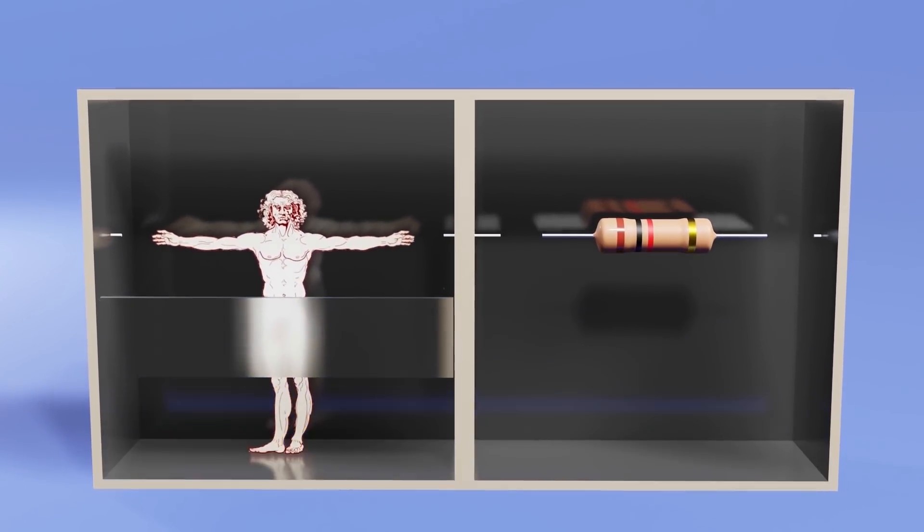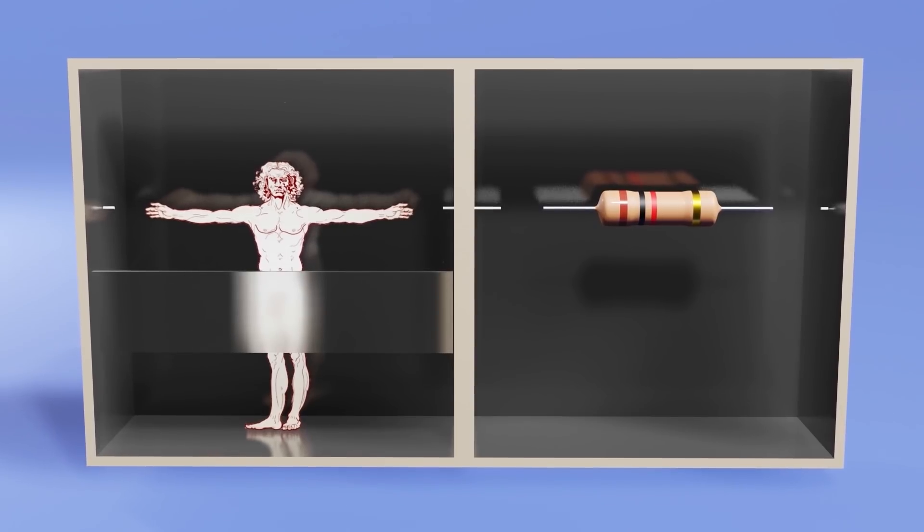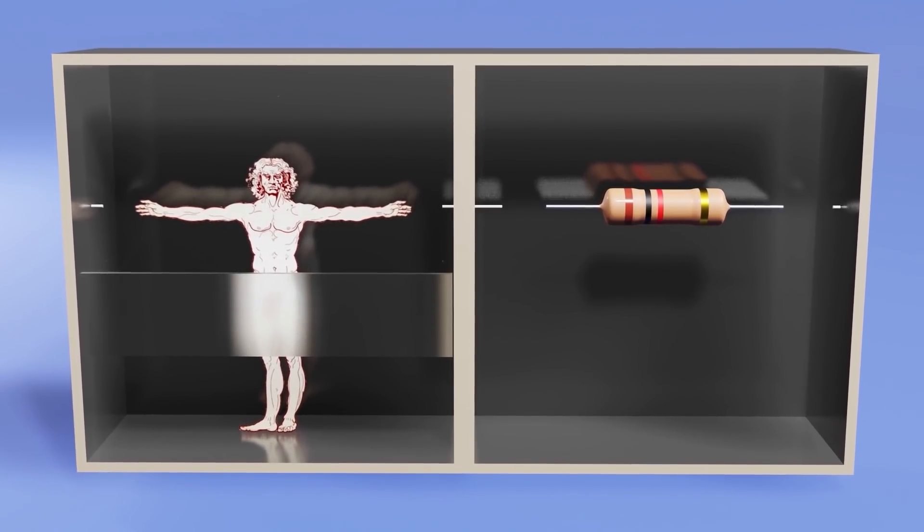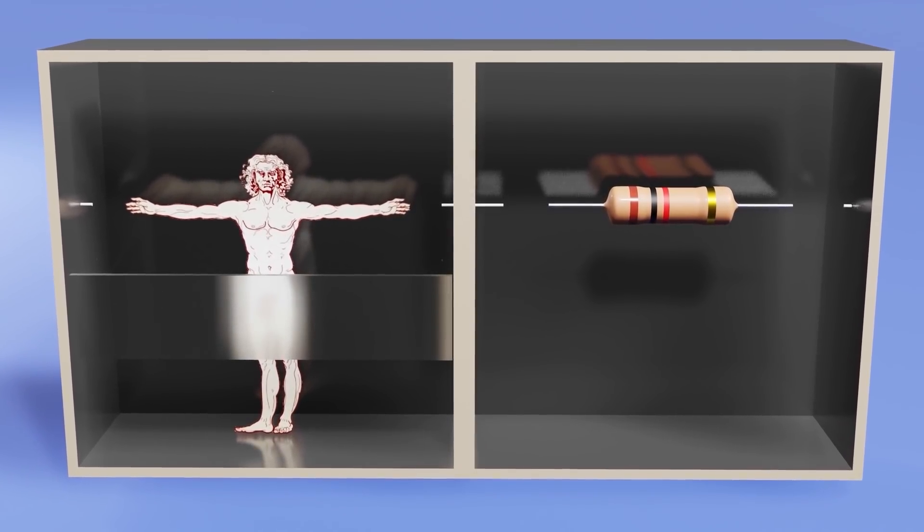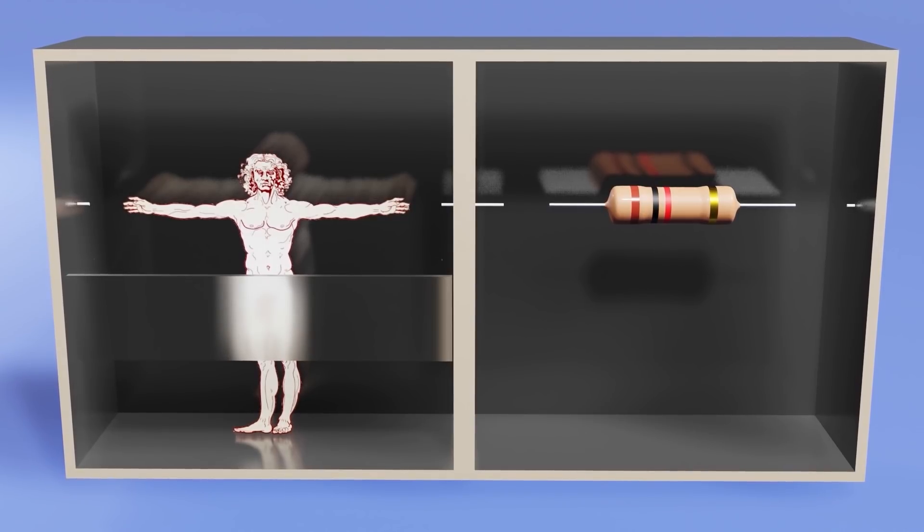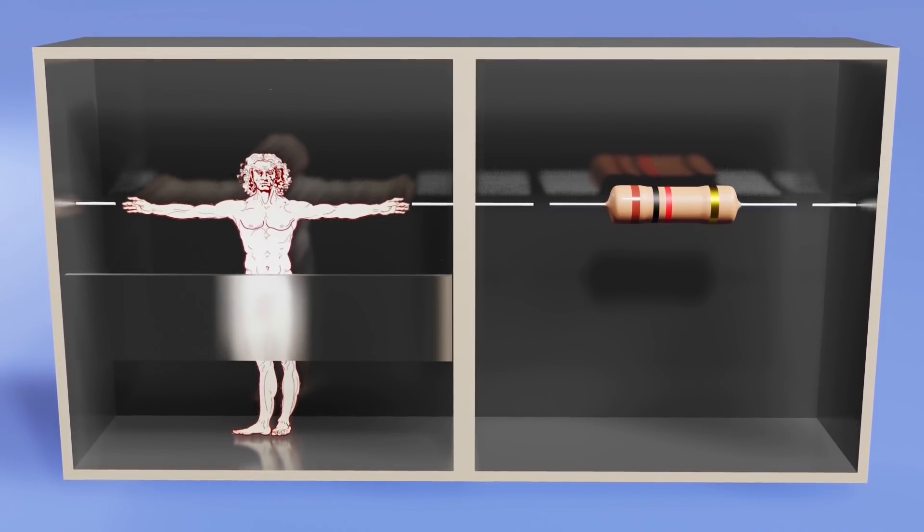In fact, since our own body is capable of conducting electricity, we could say that we are a resistor, and even that in these two circuits the resistance is equivalent. But clearly one of the two options is more viable to implement.